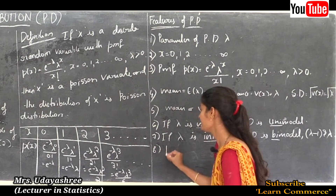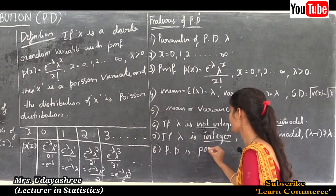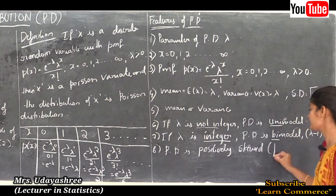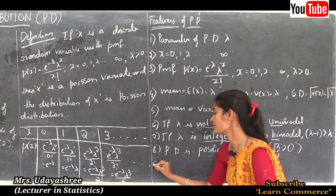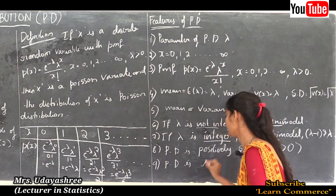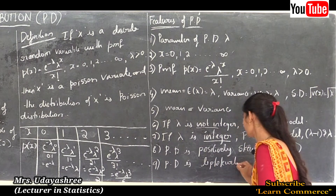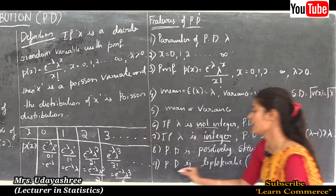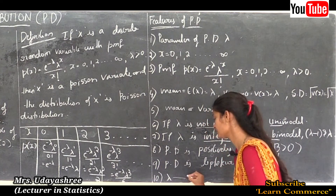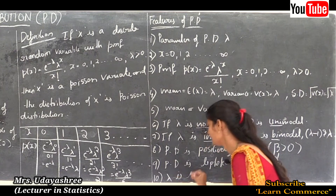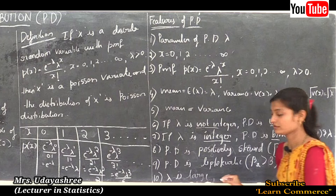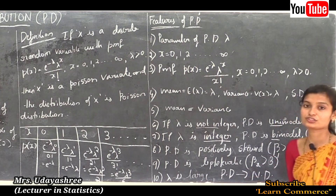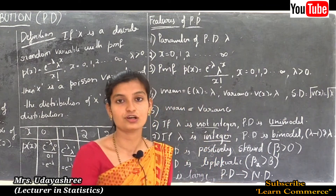Poisson distribution is positively skewed, that is beta 1 is greater than 0. Poisson distribution is leptokurtic, that is beta 2 is greater than 3. If lambda is large, then Poisson distribution tends to normal distribution. These are the important features of Poisson distribution.